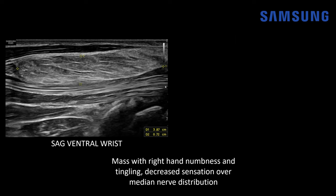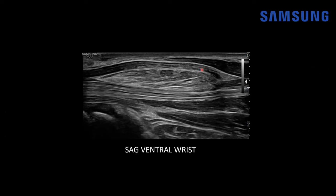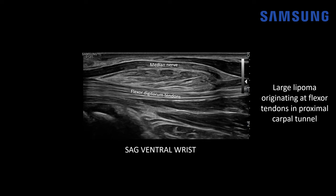Let's look at one more case — a patient presenting with a mass, right hand numbness and tingling, and decreased sensation over the median nerve distribution. On sagittal view, there's an ovoid echogenic mass measuring about 3.9 centimeters. On transverse, the mass is most consistent with a lipoma. The median nerve is just anterior to the lipoma and just posterior to the flexor digitorum tendons — it looks hypoechoic and thickened. Sagitally, the median nerve is hypoechoic and thickened in the region of this lipoma as it approaches the carpal tunnel. At surgery, this was a large lipoma originating at the flexor tendons in the proximal carpal tunnel, exacerbating the carpal tunnel syndrome.